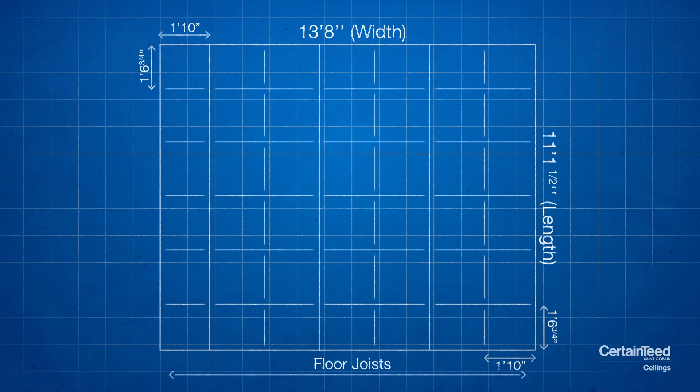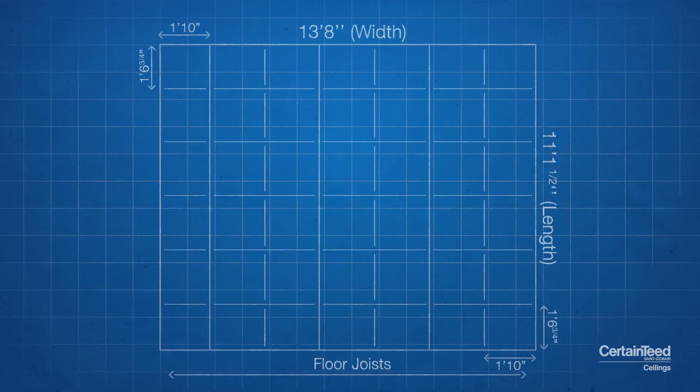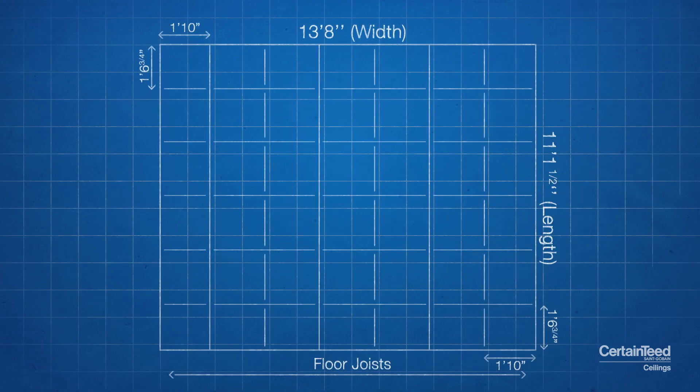Step 4. Material Calculation and Fixture Location. Using the room diagram that you created, determine the number of pieces of wall angle, main tees, cross tees, and ceiling panels you'll need to finish the project.